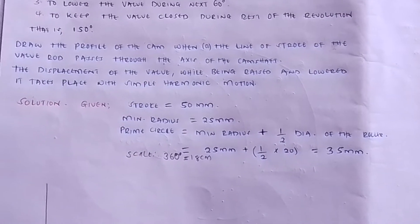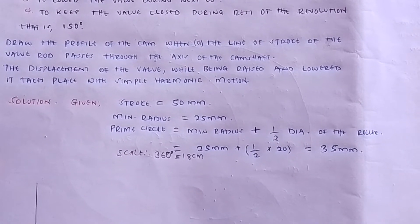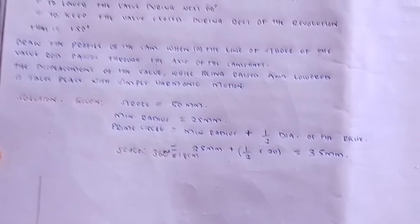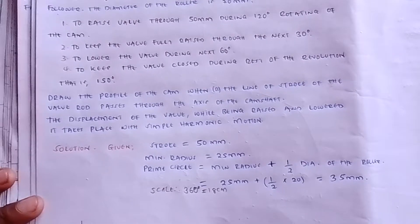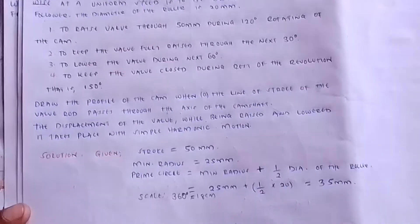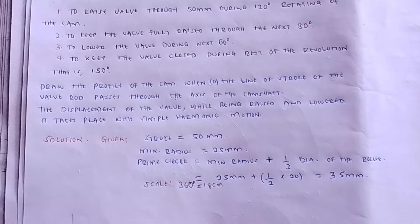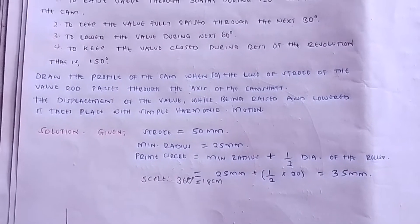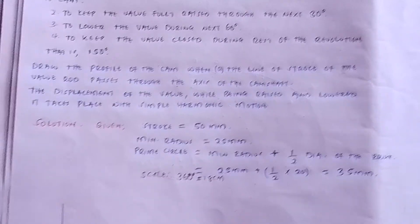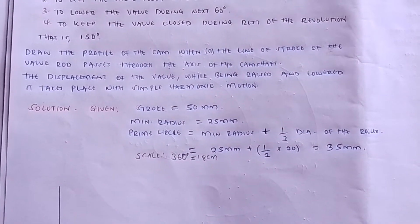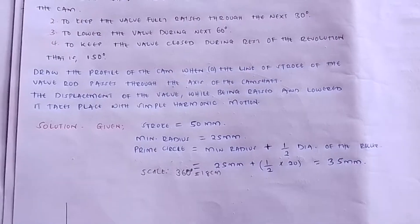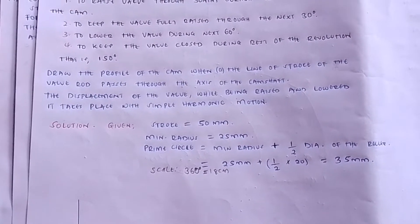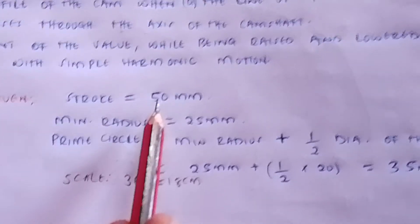Keep the valve closed during the rest of the revolution — 150 degrees. Draw the profile of the cam when the line of stroke of the valve rod passes through the axis of the camshaft, and the displacement of the valve when being raised takes place with simple harmonic motion.